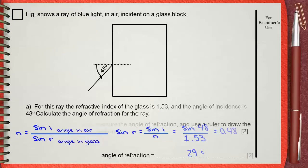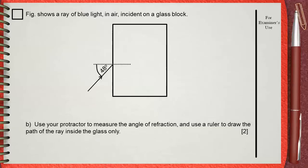Question B. Use your protractor to measure the angle of refraction and use a ruler to draw the path of the ray inside the glass only.